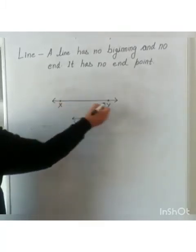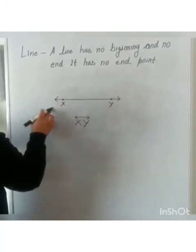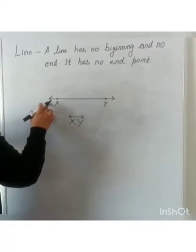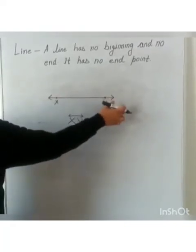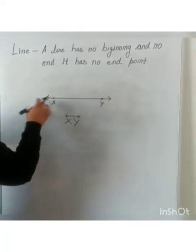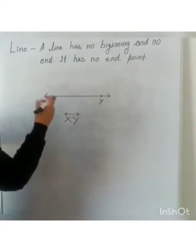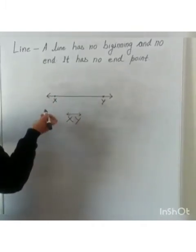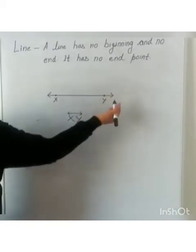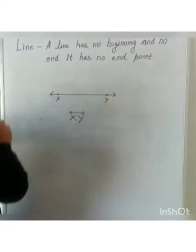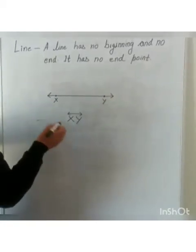And these arrows, a line is represented as double arrows. This side also, this side also. These arrows are showing that it can be extended without limit in both directions. It can be extended in this side also and this side also. So, this is called line.